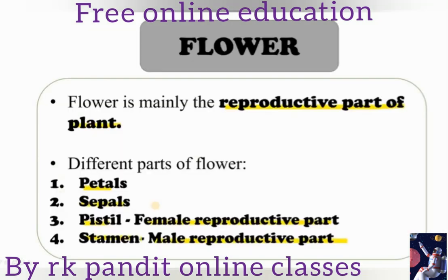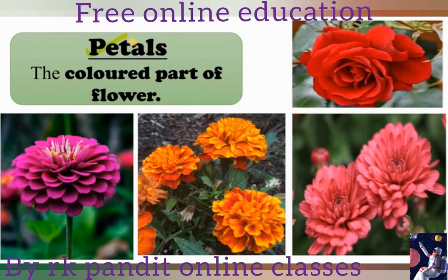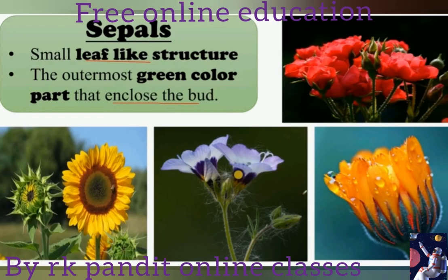Next, let's talk about flowers. The flower is the main reproductive part of the plant. The different parts of the flower are: petals, sepals, pistil, and stamens. The coloured part of the flower is called petals — they are attractive and beautiful. Sepals are small leaf-like structures that are the outermost green part enclosing the bud.